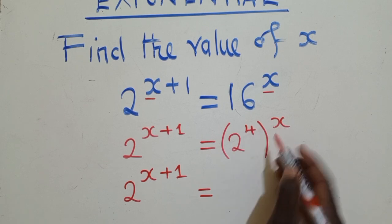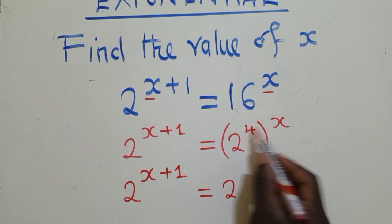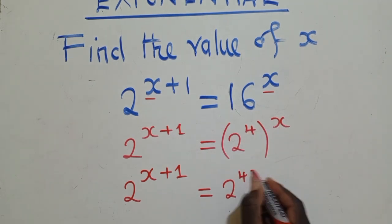You multiply them. This is multiplication. So it will just be 2 power 4 times x, which is just a 4x right here.